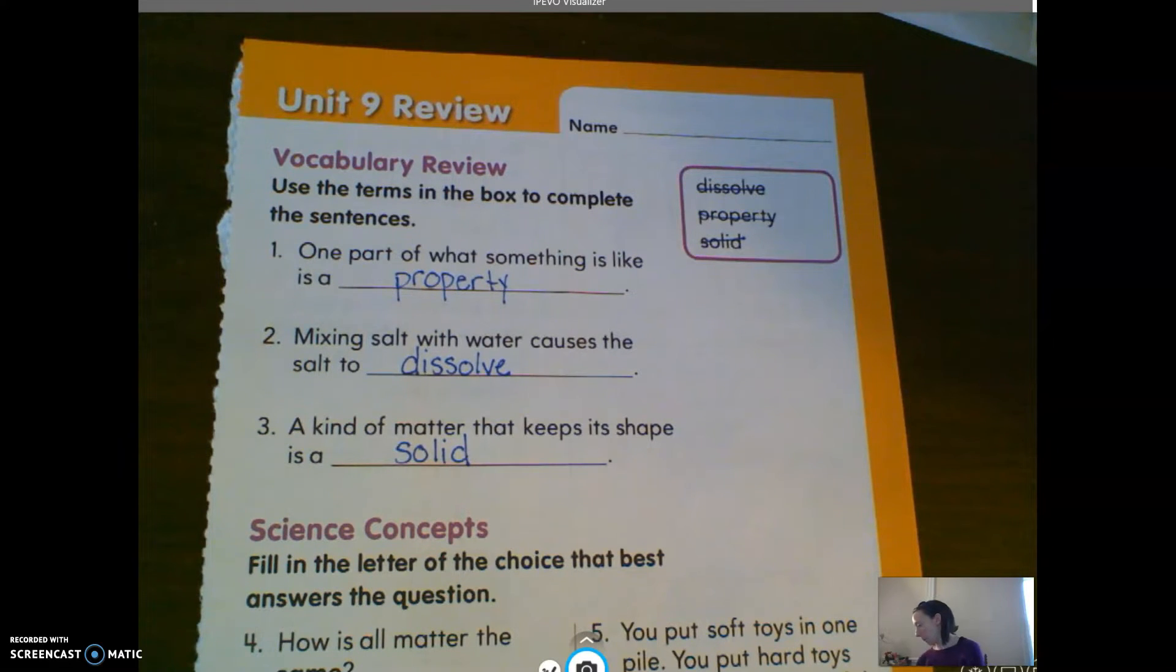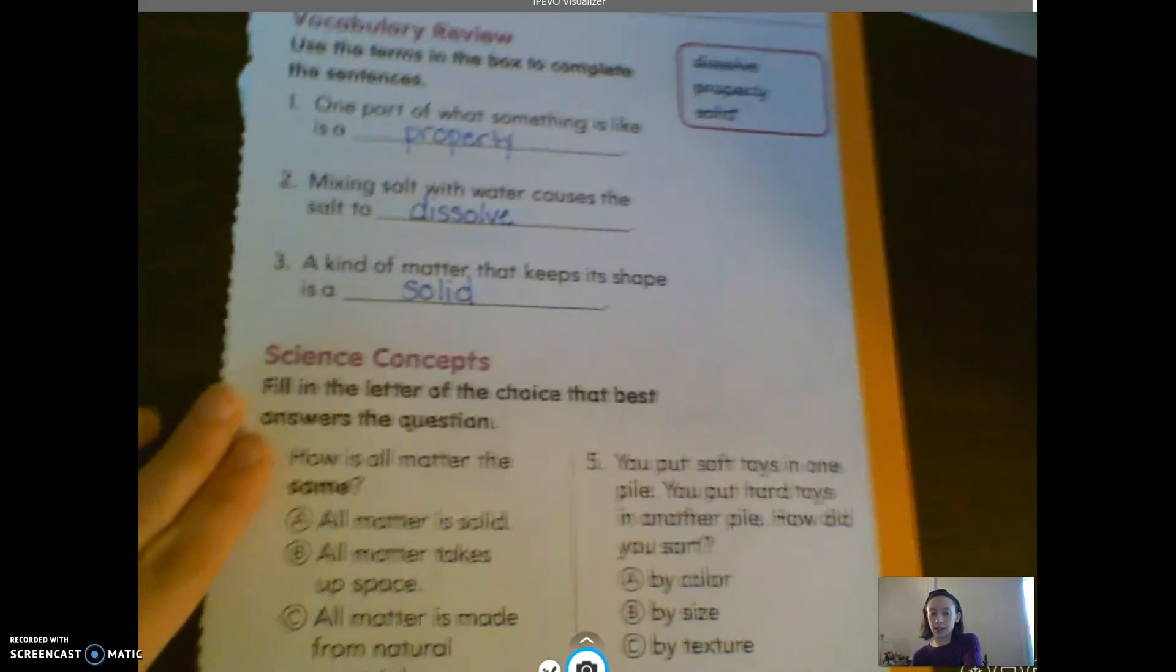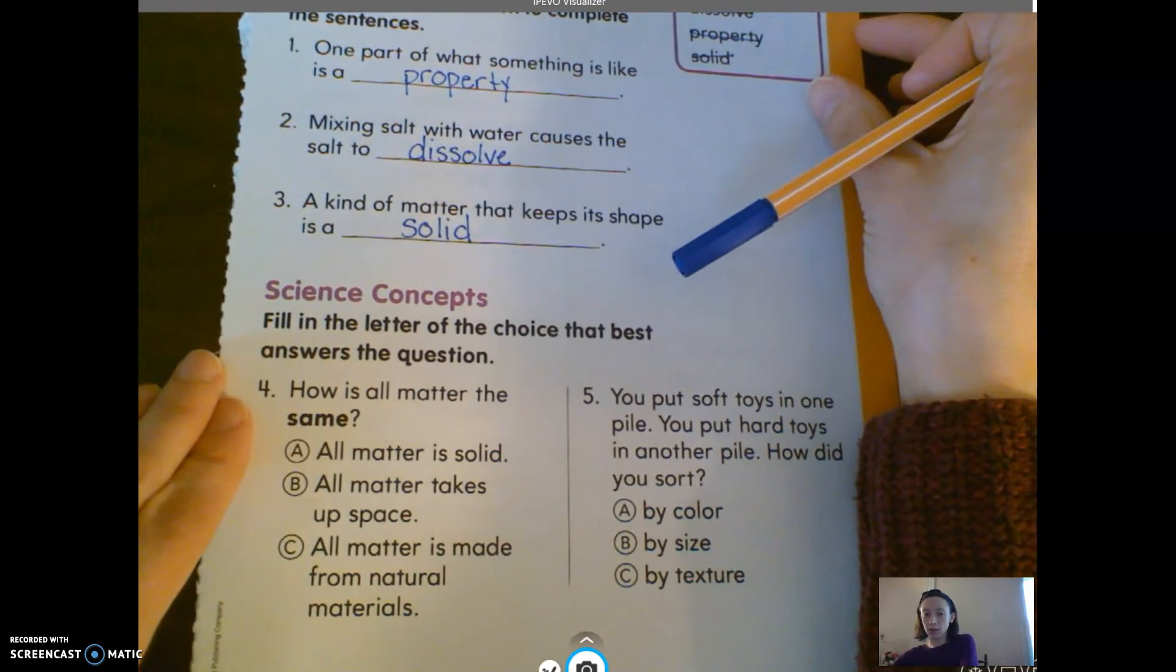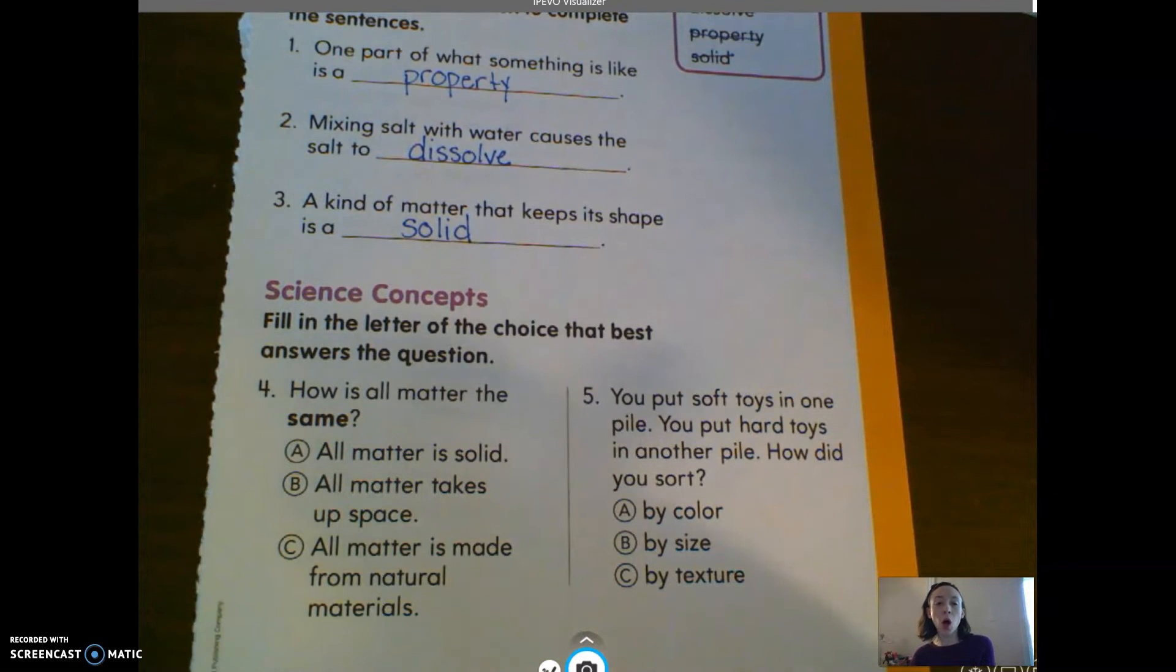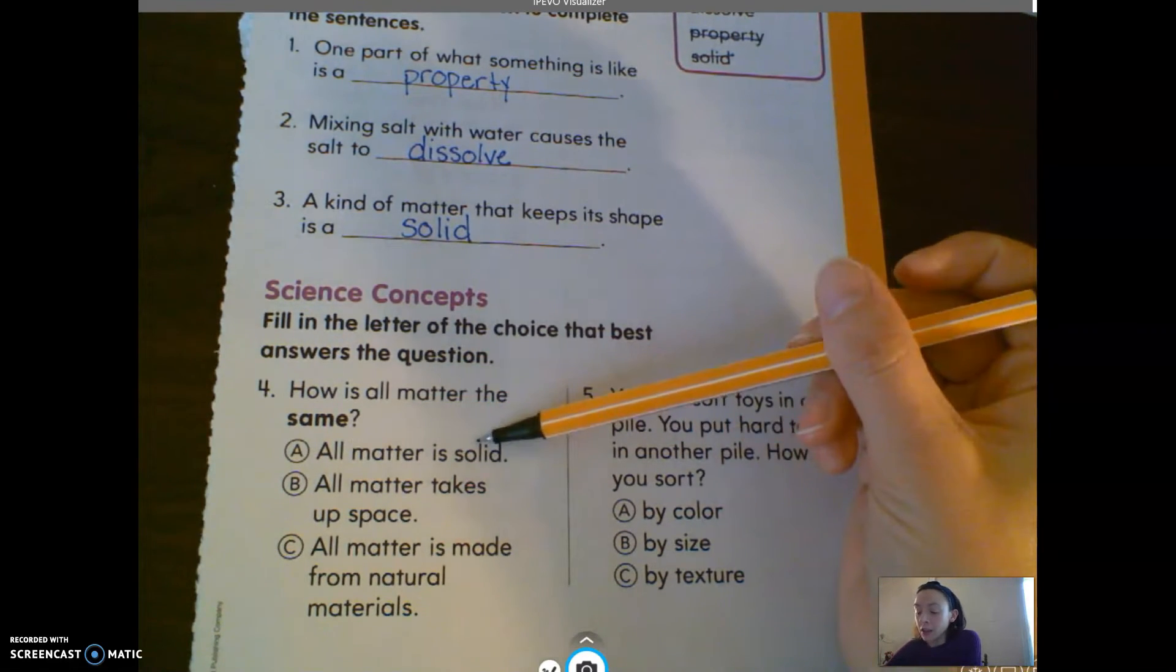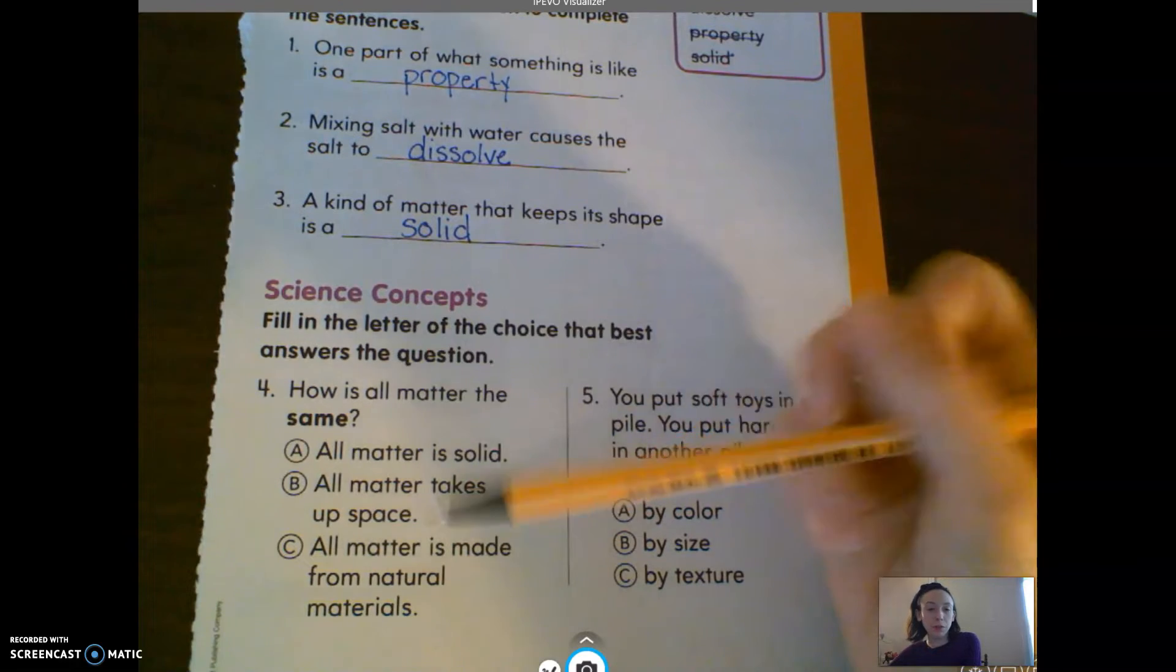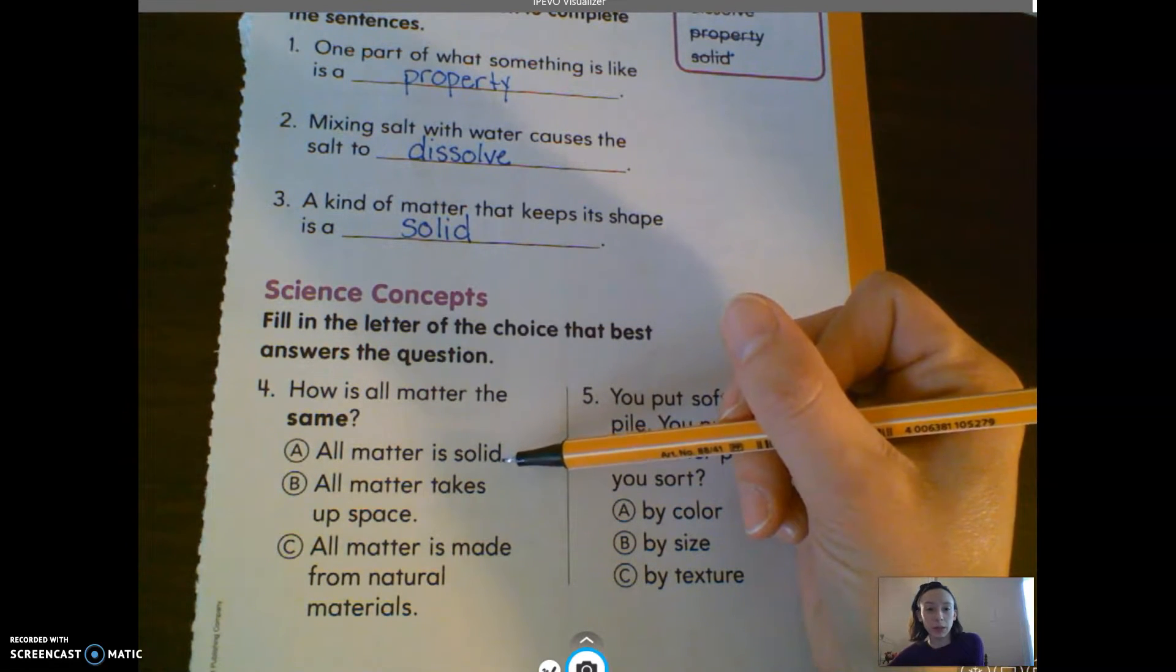Now we're going to move on to the bottom. Number four says, how is all matter the same? All matter is solid, all matter takes up space, or all matter is made from natural materials. Well, we know not all matter is solid because we also have liquids and we have gases.